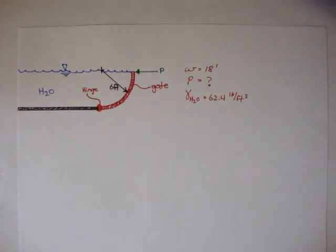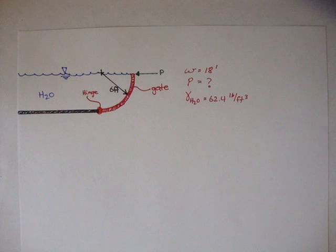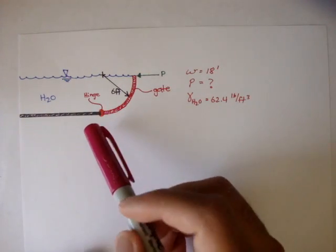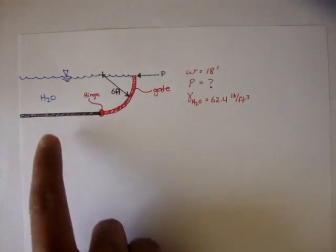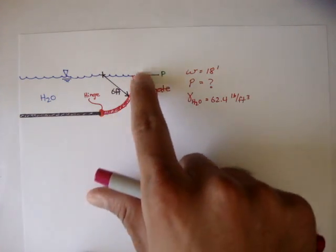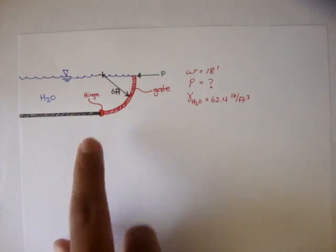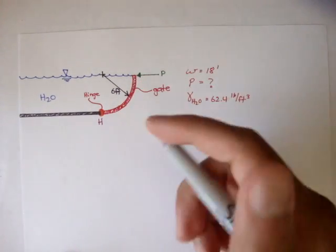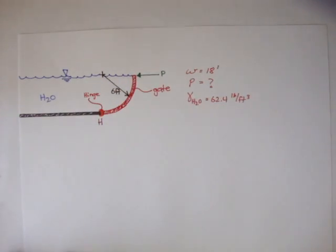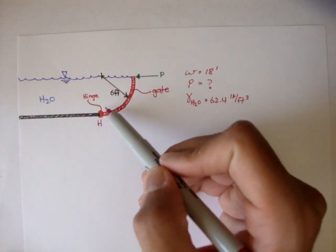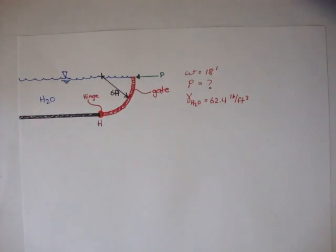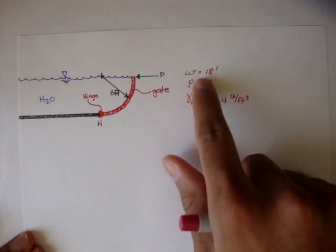Let's do our first example on forces on curved surfaces. In this problem we have some sort of tank. Down here is just a rigid ground, filled with water and there's a gate here. It's hinged at point H for hinge. There's a force P pushing here to keep the gate from falling and releasing all the water. The water is 6 feet high from the ground because the gate has a radius of 6 feet. The width of the gate is 18 feet.